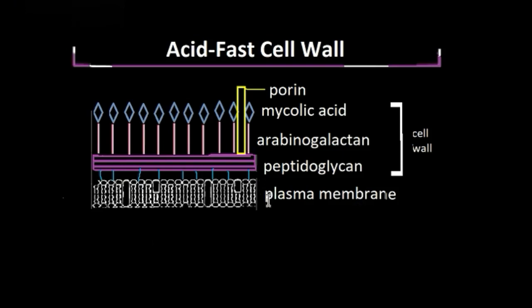Surrounding the plasma membrane, we have our cell wall, which is composed of a thin layer of peptidoglycan attached to an arabinogalactan layer, which is then connected to a mycolic acid layer.